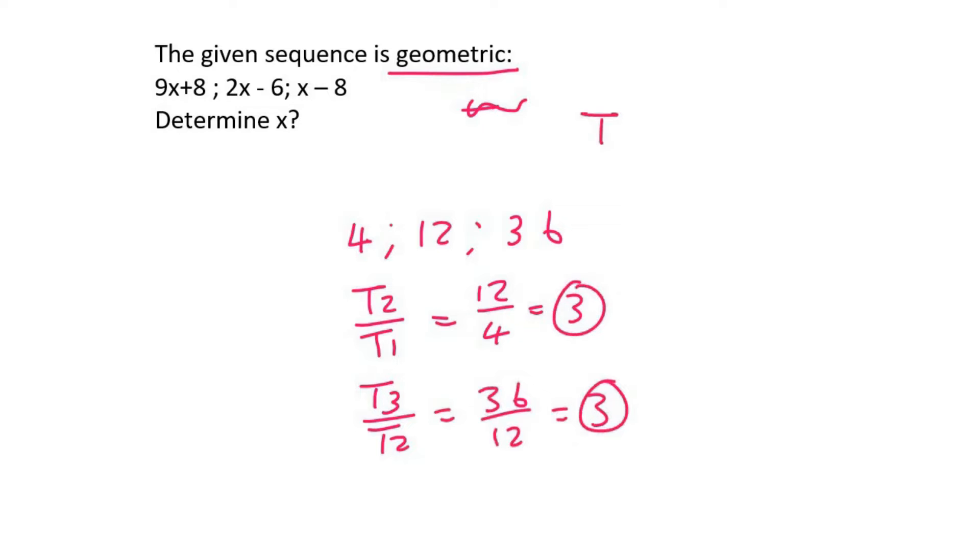Remember that geometric patterns have a property that says term 3 over term 2 is the same as term 2 over term 1. We just saw that happening. So whenever something's geometric, this is true. We can say T3 over T2 must be the same as T2 over T1. You can also switch this around. You could have it the other way.